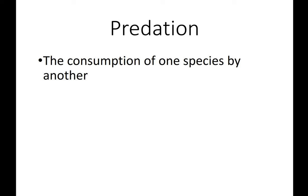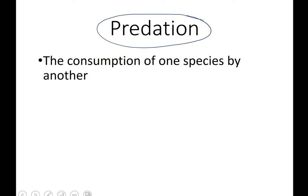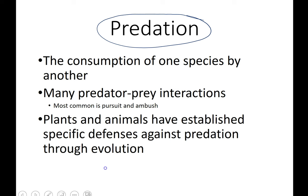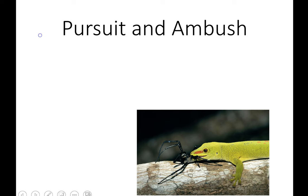Now, predation is not necessarily a symbiotic relationship. You know what a predator-prey relationship is — it's where one species eats another. Technically, herbivores are predators on plants, even if we don't often think of them that way; it's just the consumption of one species by another. Plants and animals, because of this co-evolutionary process, have actually established some defenses against predation through evolution.